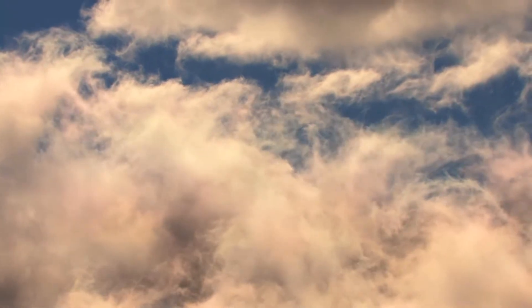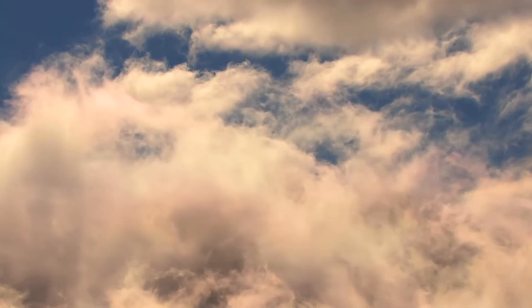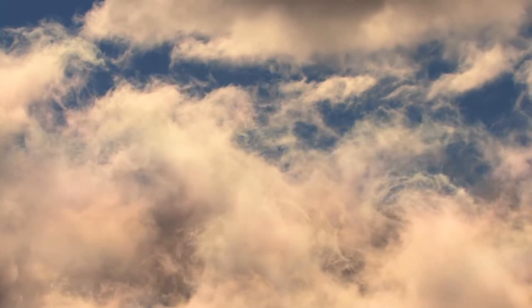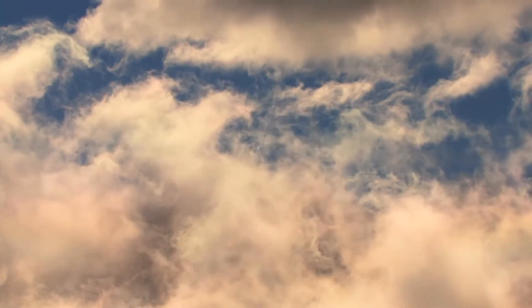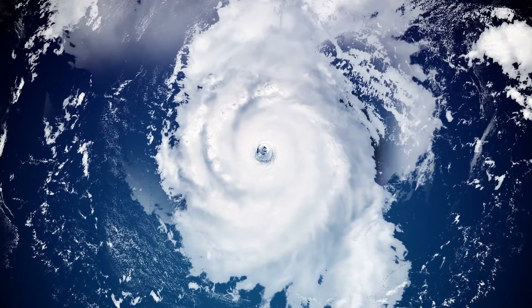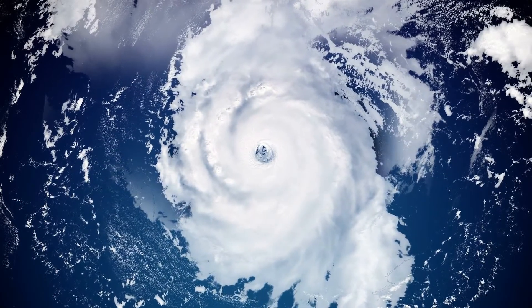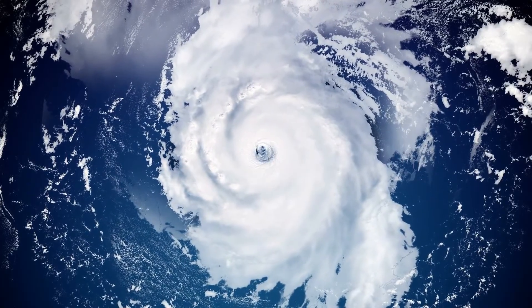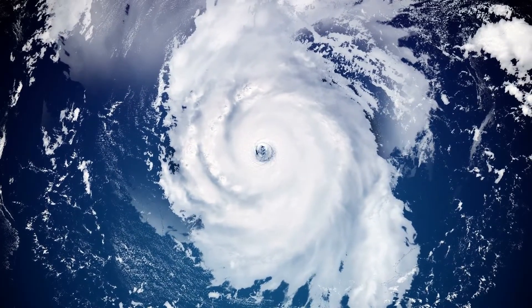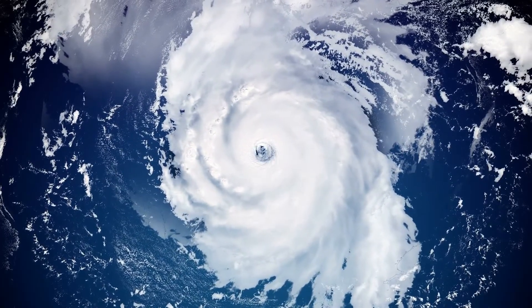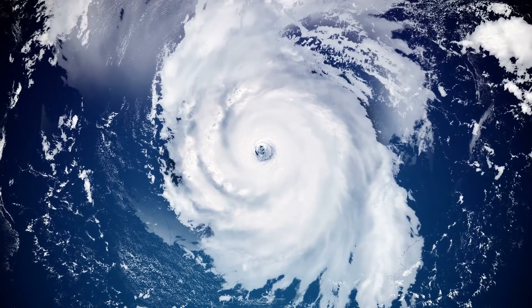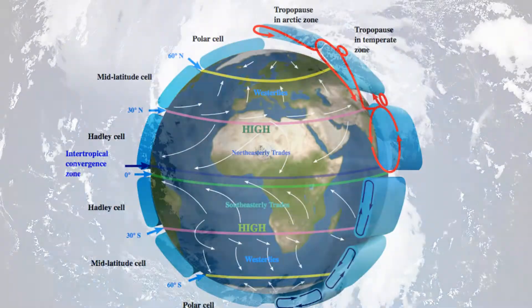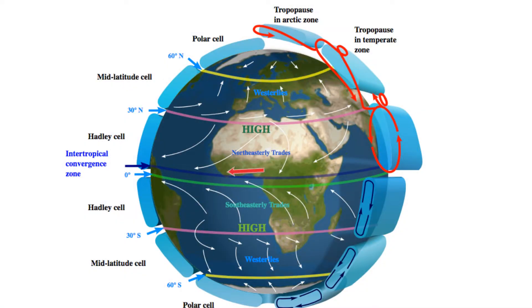As the warm moist air rises and cools off, the water in the air forms clouds. This whole system of clouds and winds spins and grows, fed by the ocean's heat and water evaporating from the surface. Trade winds then blow across the equator and help push the storm along.